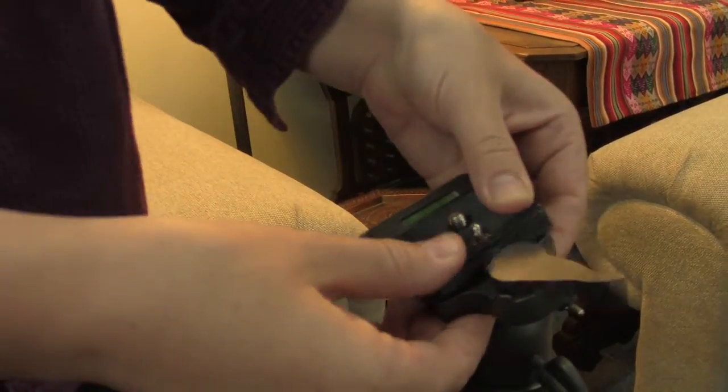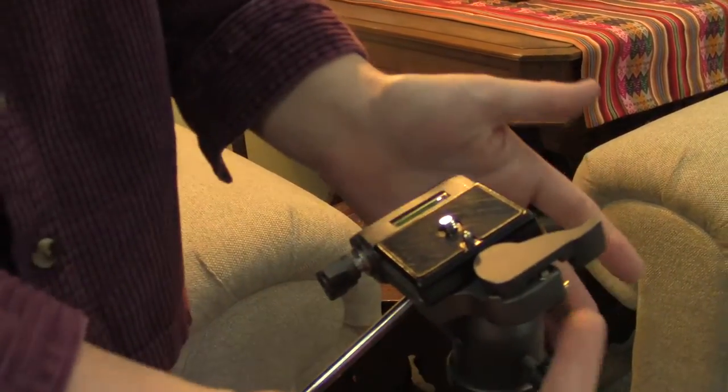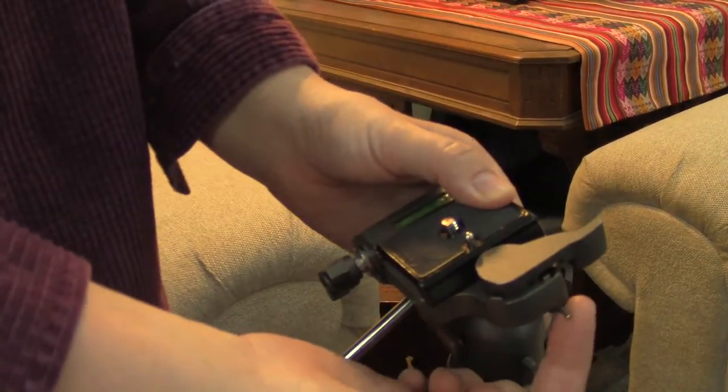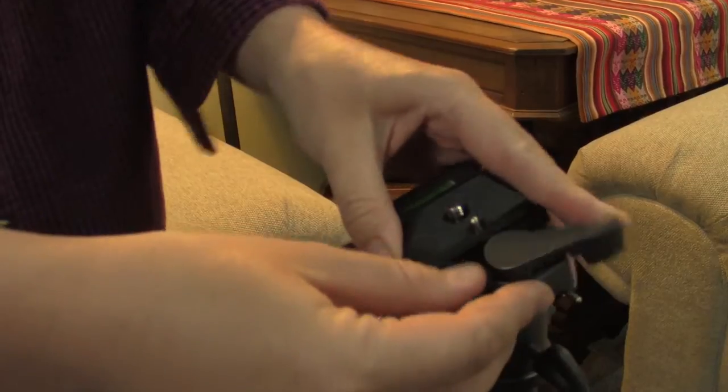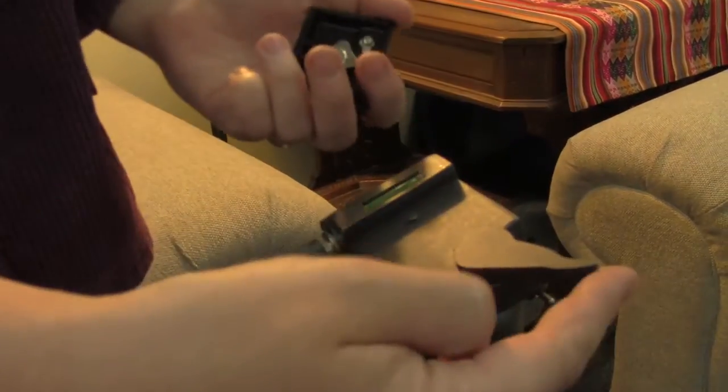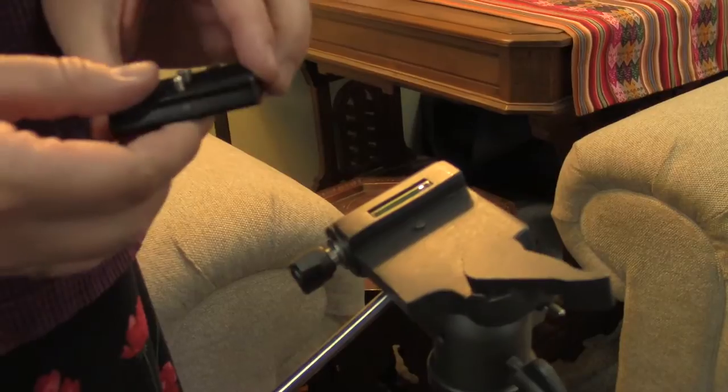So again, make sure that little lever is pushed all the way to the right. It only moves 90 degrees either way. Then use the thumb lever and it will pop out.